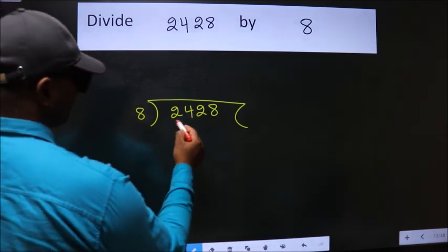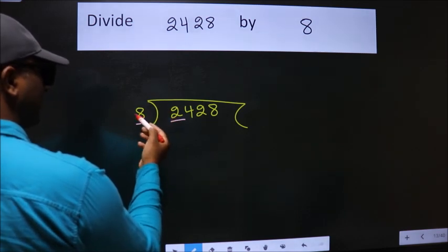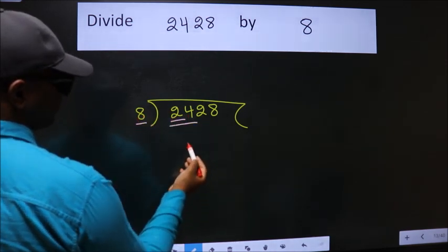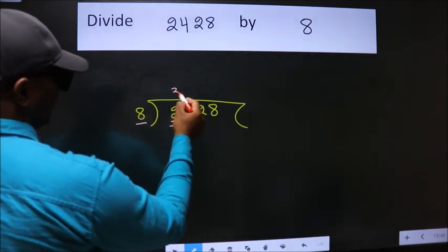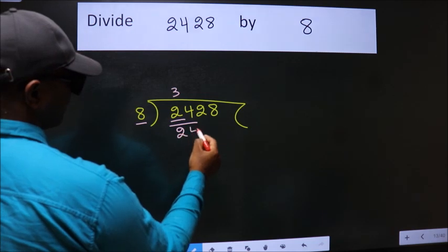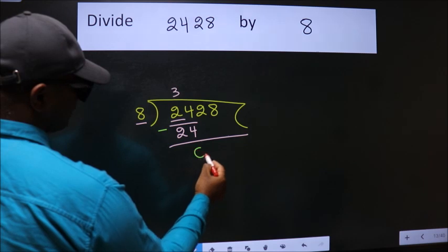Next, here we have 2, here 8. 2 is smaller than 8, so we should take 2 numbers: 24. When do we get 24 in the 8 table? 8 times 3 is 24. Now we should subtract. We get 0.